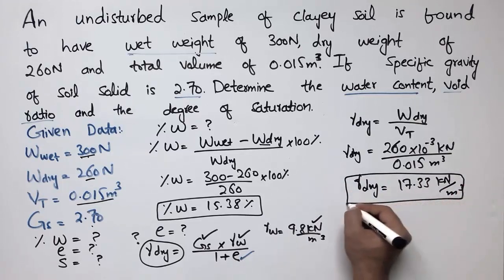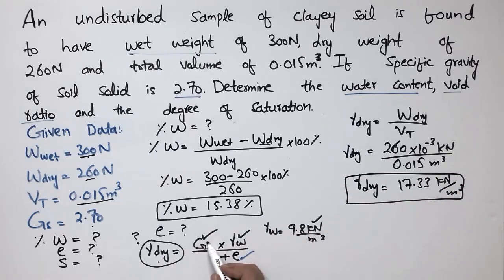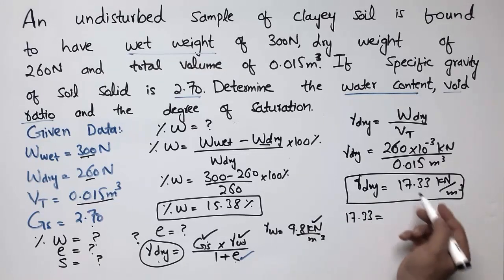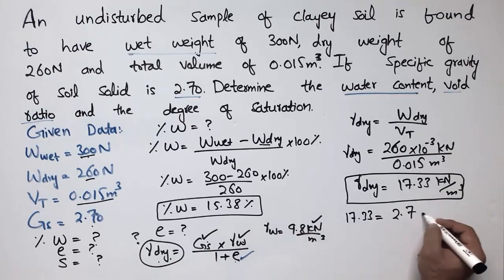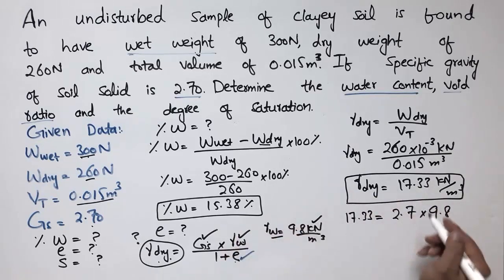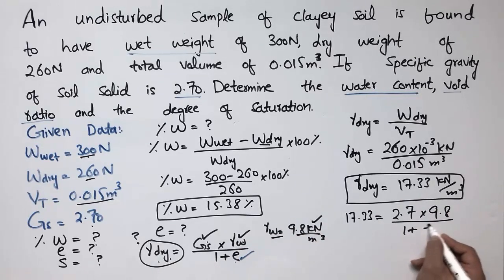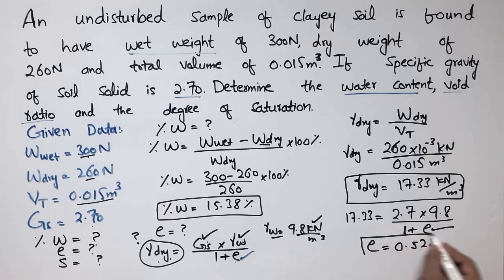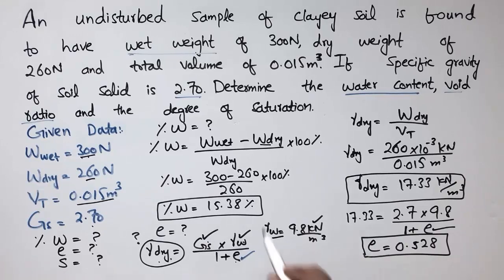Now putting this value into the formula: 17.33 = 2.7 × 9.8 / (1 + E). Solving this equation, E comes out to be 0.528. The void ratio is not expressed in percentage but in decimal form, so the void ratio of this soil sample is 0.528.